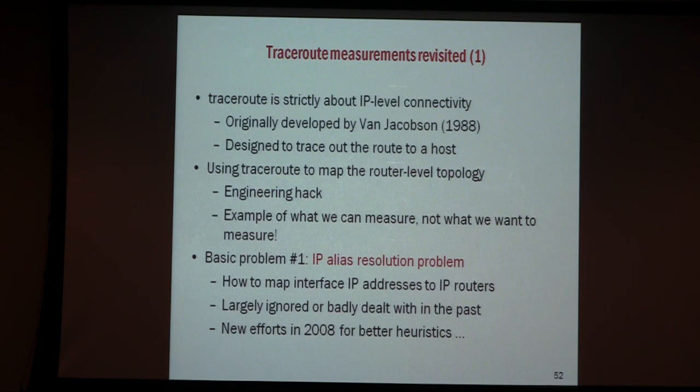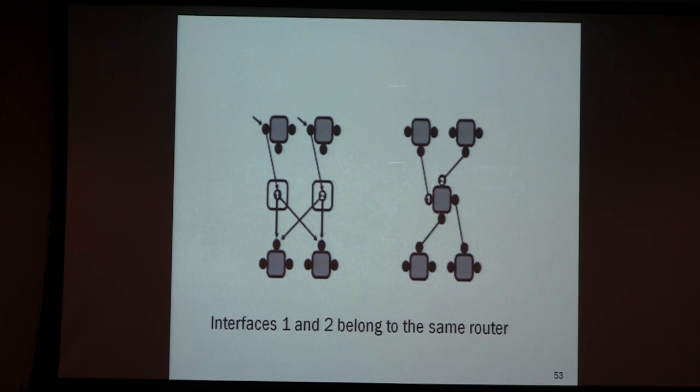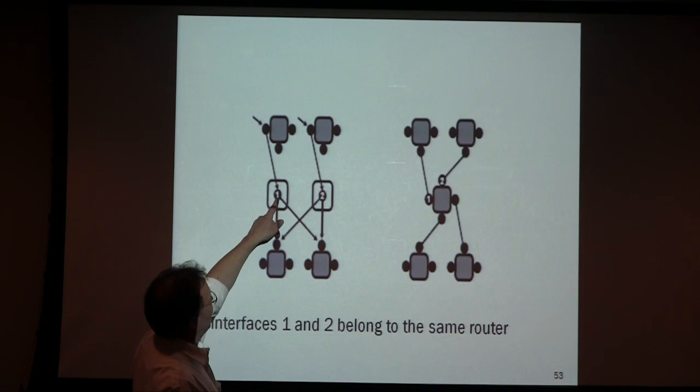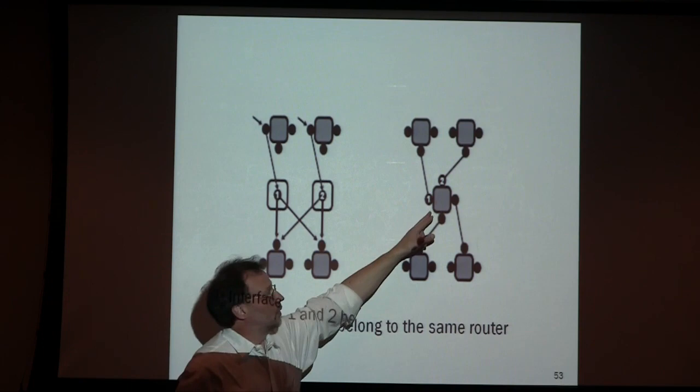Projects like Rocket Fuel have spent most of their time trying to fix that router-alias resolution problem, but it is all heuristics. The real problem is: if you have two interfaces of one and the same router, and traceroutes coming from two different directions map to this picture without knowing those two elements belong to one router, you work with a graph that is wrong.